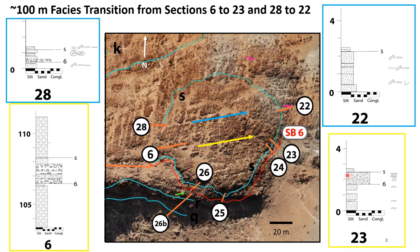Based on this, we suggest that these observations are more consistent with a fluvial canyon rather than a submarine canyon, as a submarine facies transition would be expected on the roughly kilometer scale rather than the meter scale.